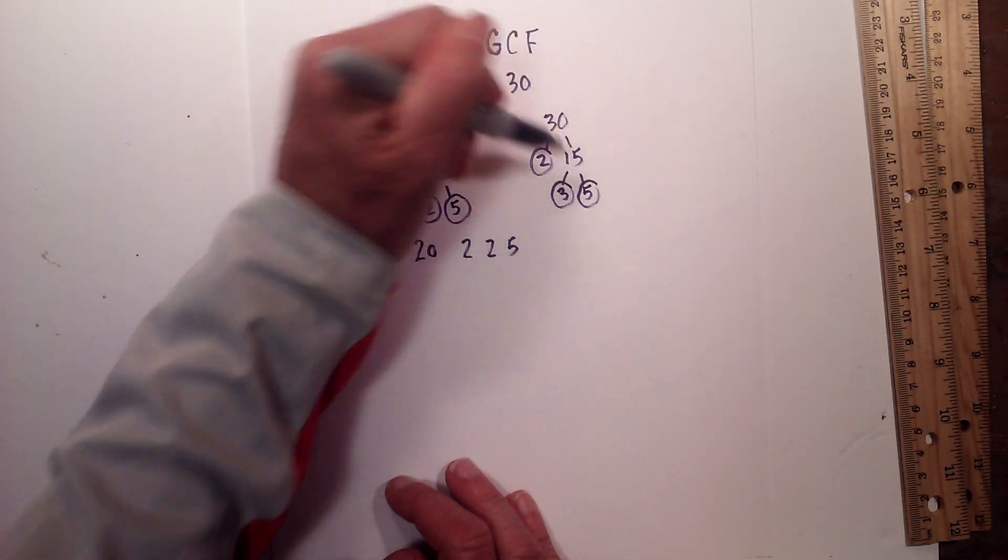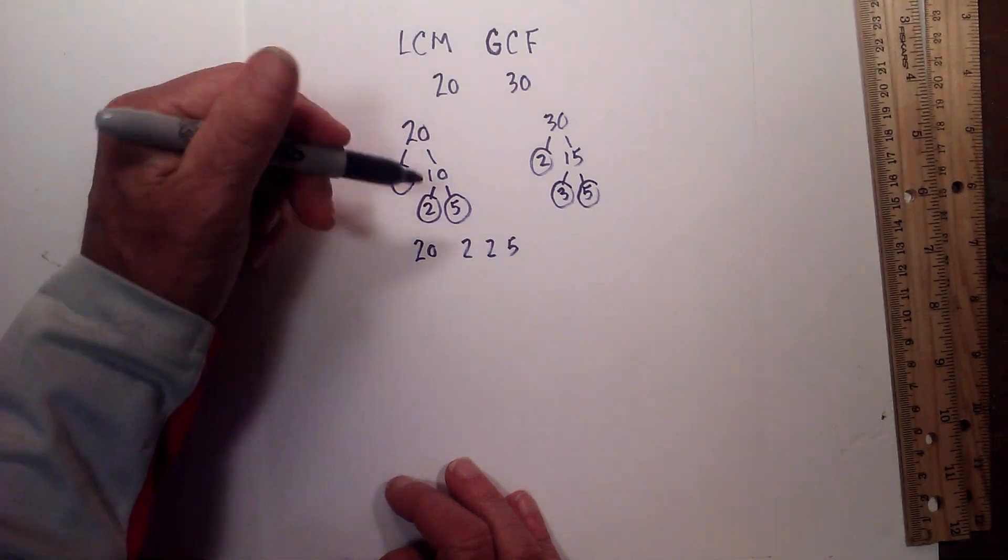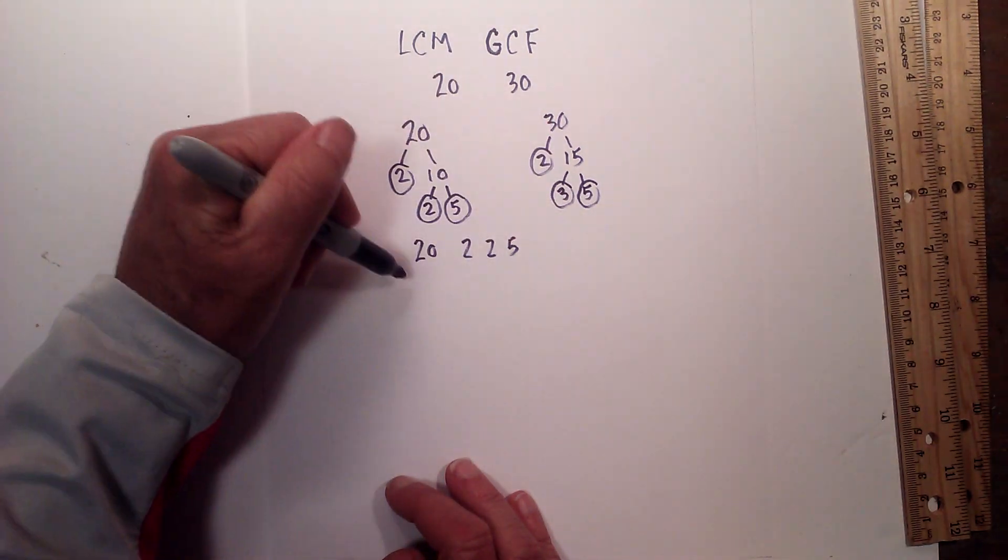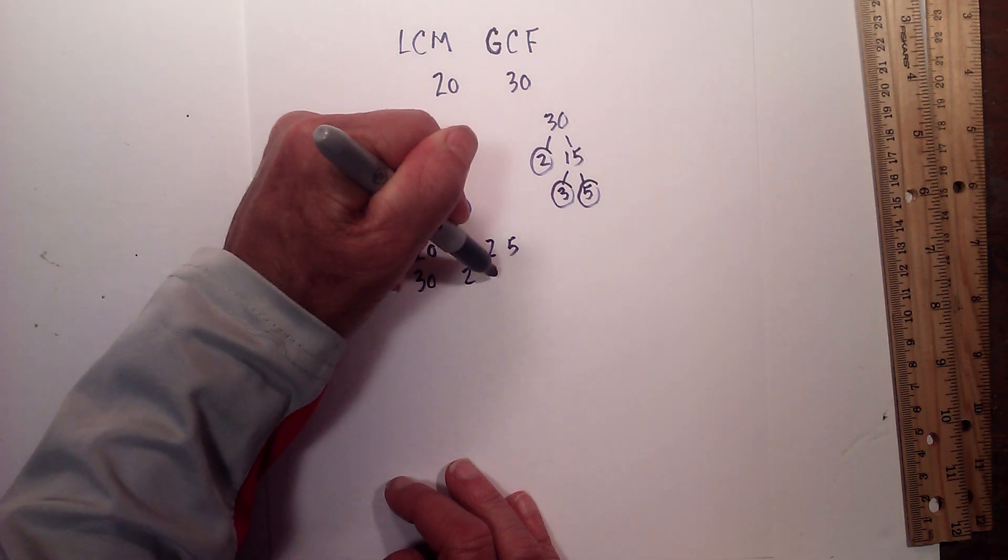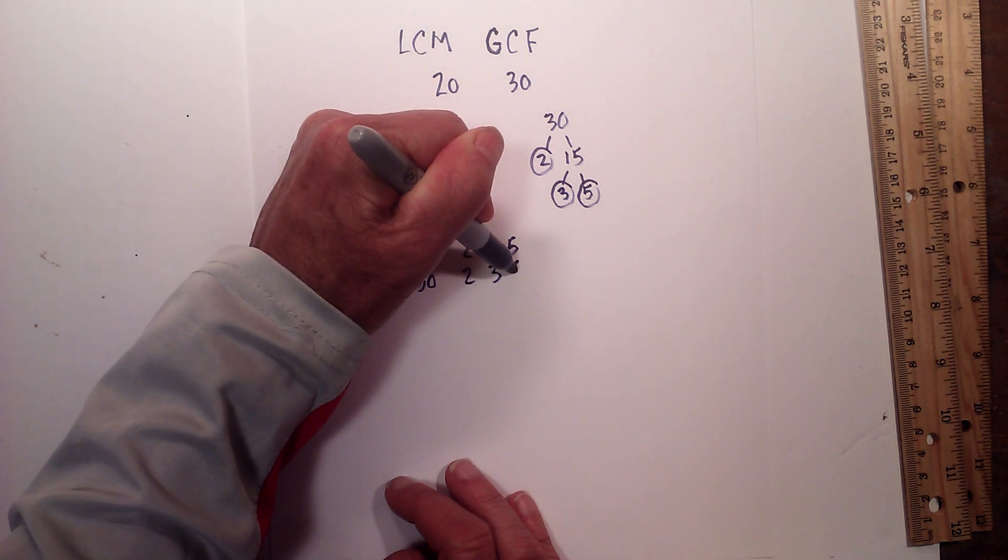Circle the 3 and the 5 because they are prime and we're down to prime numbers, so the prime numbers for 30 are 2, 3, and 5.